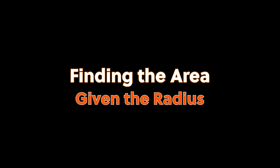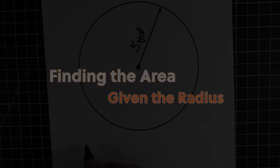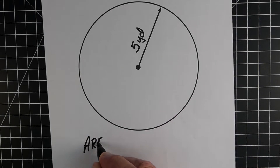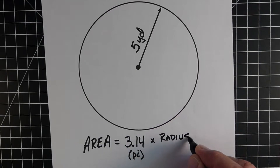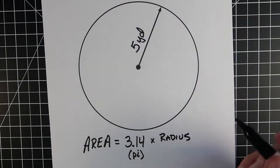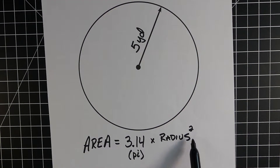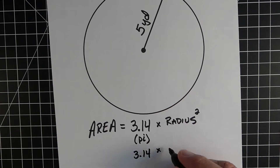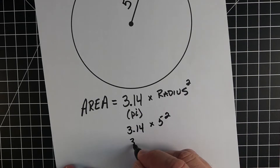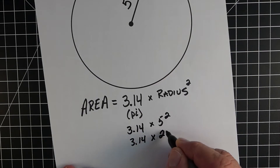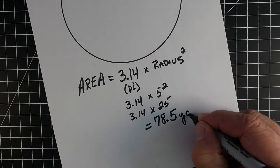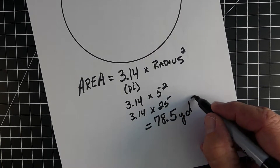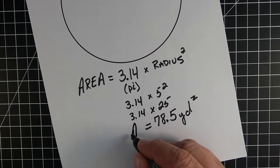Our first area example is where we know the radius. Here the radius is 5 yards. So the area equals pi, which is 3.14, times the radius squared. The radius is halfway across the circle. So it's 3.14 times 5 squared. We square the 5 to get 25, so now it's pi times 25. That gives us 78.5 yards squared, since we're talking about area.